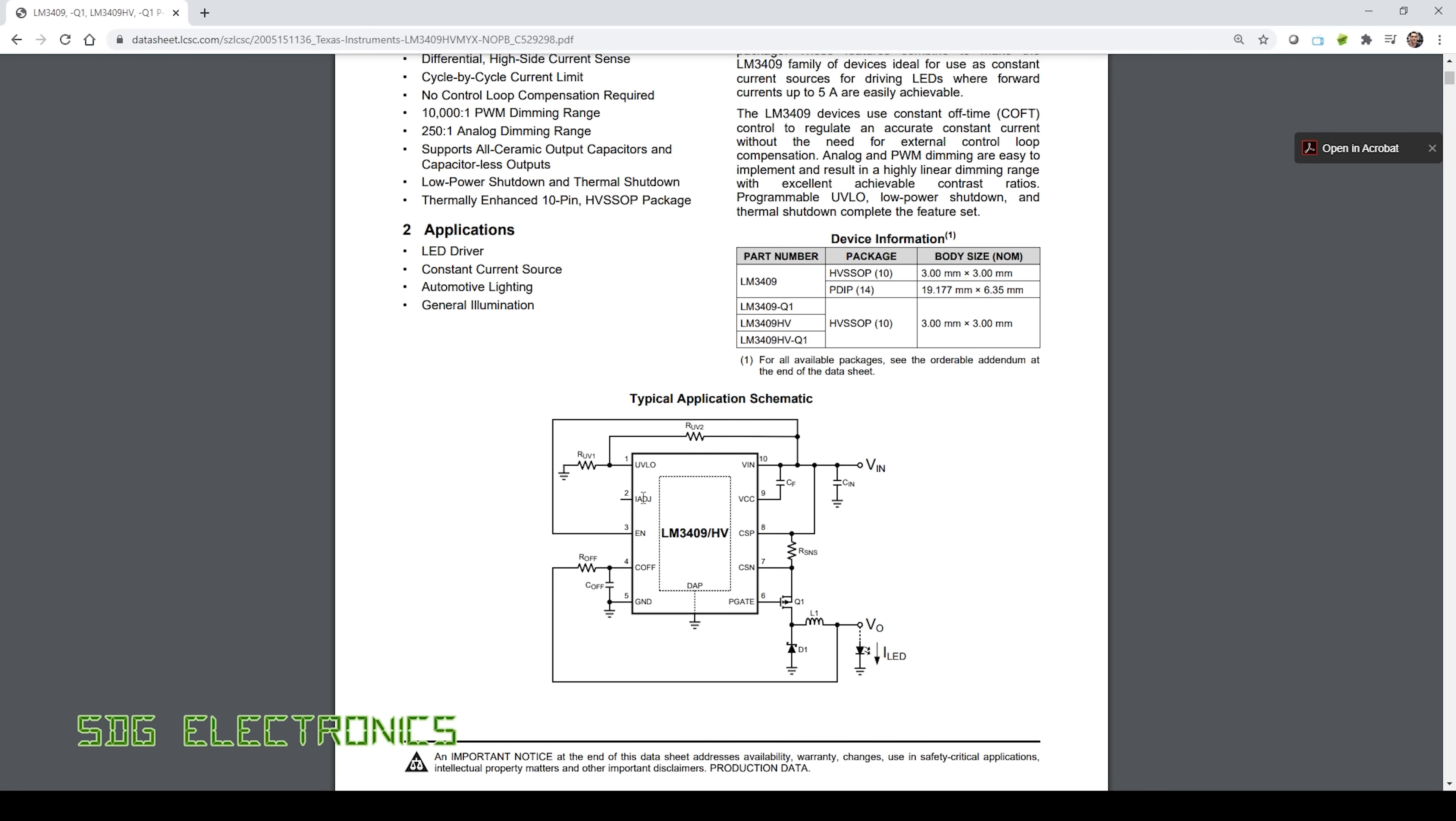Now we've got these two inputs here, the I adjust and the enable. Depending on how you want to dim the LED you can either use the enable pin with a PWM output from some other driver or you can adjust the sense current using the I adjust pin and feed in an analog voltage here to control the brightness of the LED. Now using the PWM controller allows a much wider range of brightness ranges so that's what we're using in this application.